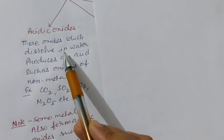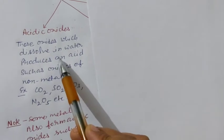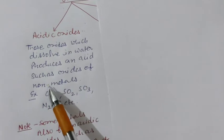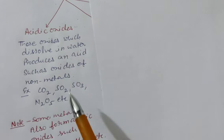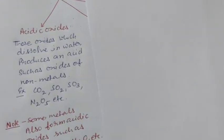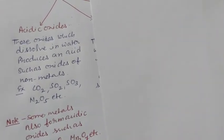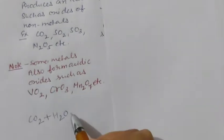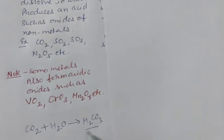The oxides of non-metals are examples of acidic oxides because they react with water and form acids. CO2 is an oxide of carbon. It reacts with water and forms H2CO3 which is an acid.